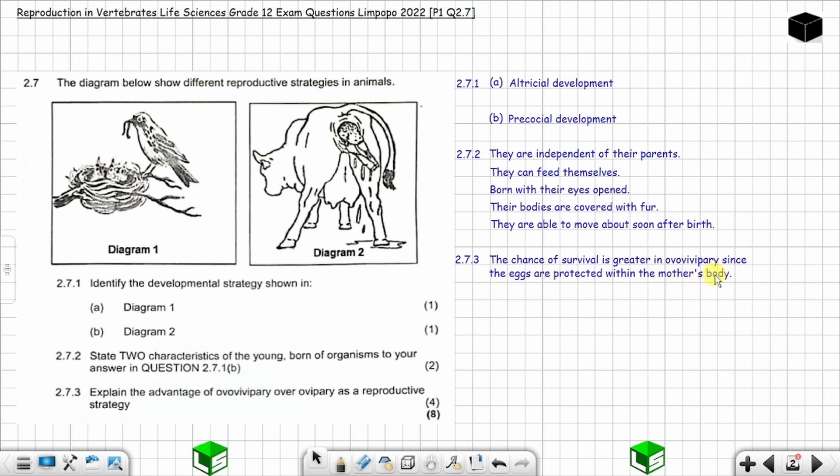As compared to ovipary, the chance of survival is smaller in ovipary because the eggs are laid and may be eaten by predators. So we are done with question 2.7 from Limpopo 2022.